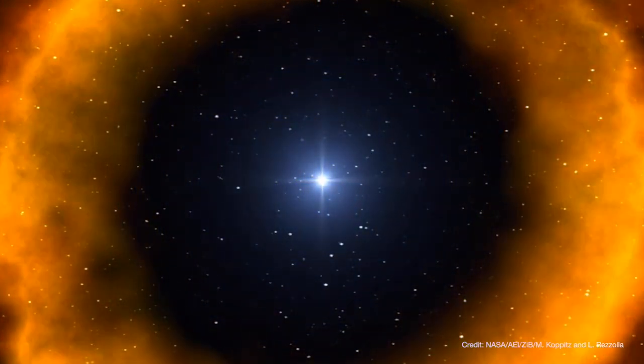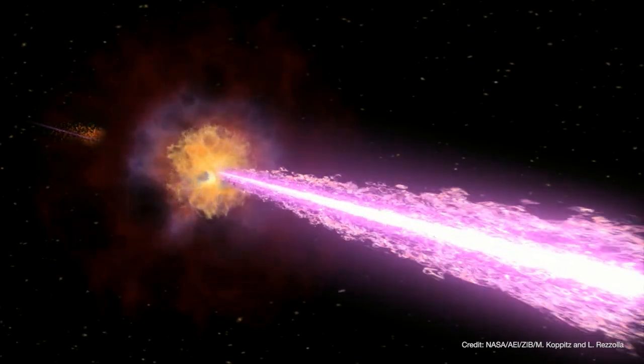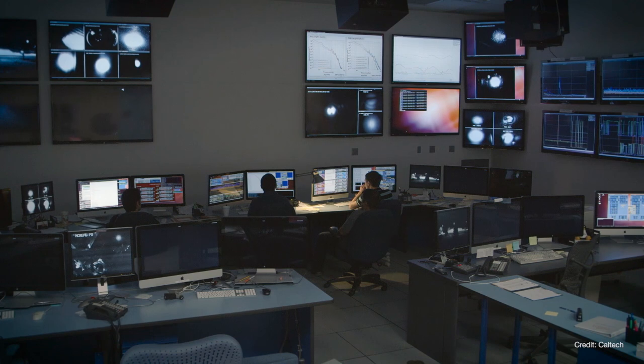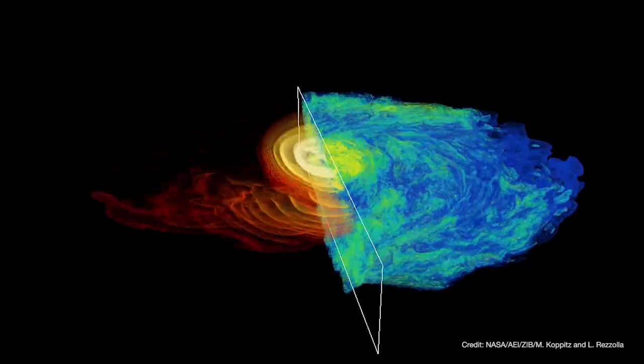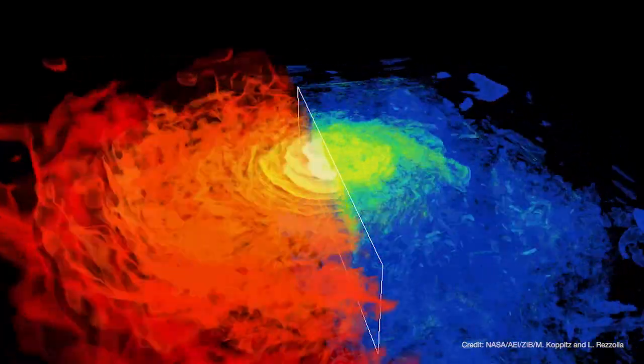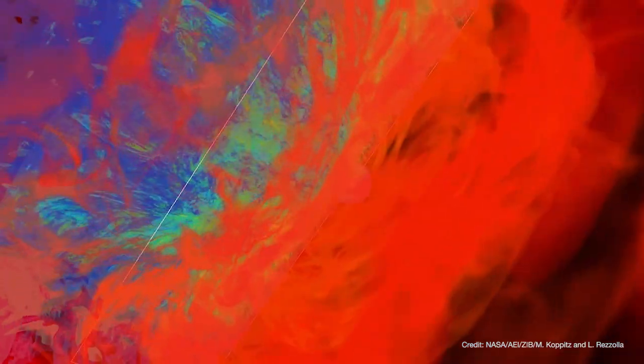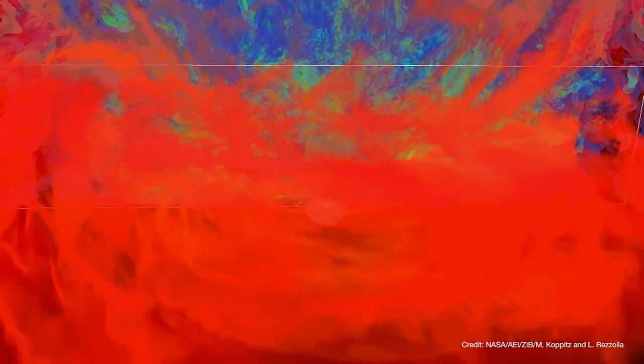It created this huge explosion called a short gamma-ray burst, and this short gamma-ray burst was subsequently detected by a couple of space-based gamma-ray telescopes. And then for the subsequent couple of weeks after that we've been observing the emission in different wavelengths of light, including UV, optical, and radio waves.